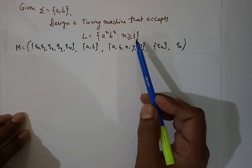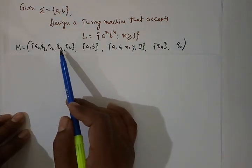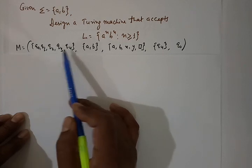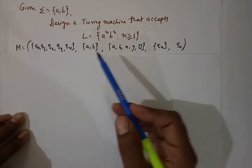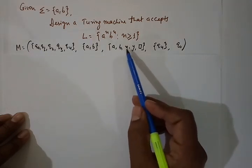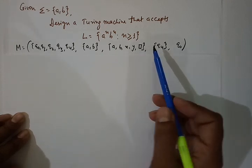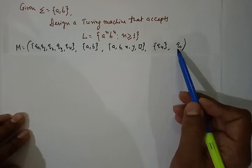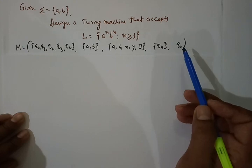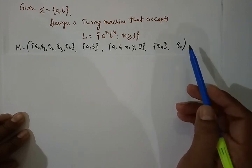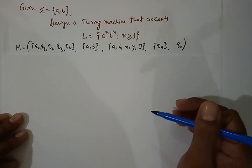The components of our Turing machine are: Q, the set of states {q0, q1, q2, q3, q4}; {a, b} is our input alphabet; and {a, b, x, y, blank} is our tape alphabet.